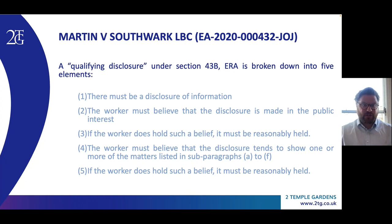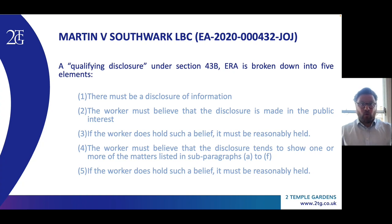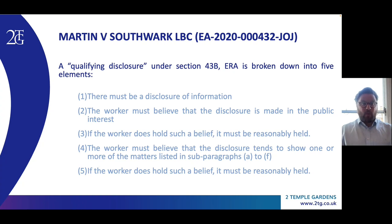Fourth, the worker must believe that the disclosure tends to show one or more of the matters listed in subparagraphs (a) to (f) of section 43B. And fifthly, if the worker does hold such a belief, it must be reasonably held. As noted by His Honour Judge Auerbach in the Williams case itself, all five conditions must be satisfied for there to be a qualifying disclosure. And the case of Martin serves as a welcome reminder that the tribunal must — or at least should be taken through and consider — all five parts of the five-part test when determining a whistleblowing claim, and a failure to do so may render the subsequent judgment vulnerable to appeal.